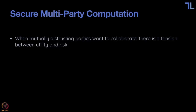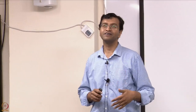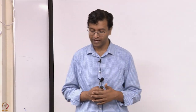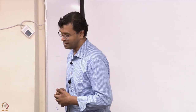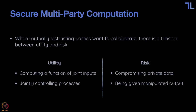That's the setting we have: mutually distrusting parties want to collaborate. Today, of course, you just trust Google — you send your query to Google and we're all accustomed to being okay with that. But in a more privacy-oriented world, you wouldn't want to do that. More generally, in all these problems you have this tension between utility and risk.